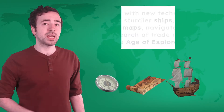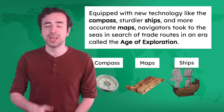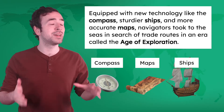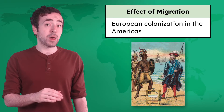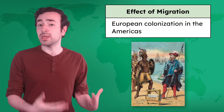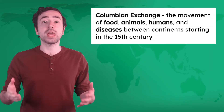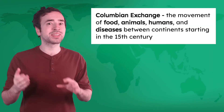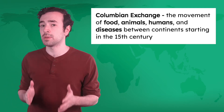Equipped with new technology like the compass, sturdier ships, and more accurate maps, navigators took to the seas in search of trade routes in an era called the Age of Exploration. Navigators from Europe eventually met Native American populations, which led to a wave of European colonization in the Americas. This colonization led to a movement of food, animals, humans, and diseases between continents we now call the Columbian Exchange.